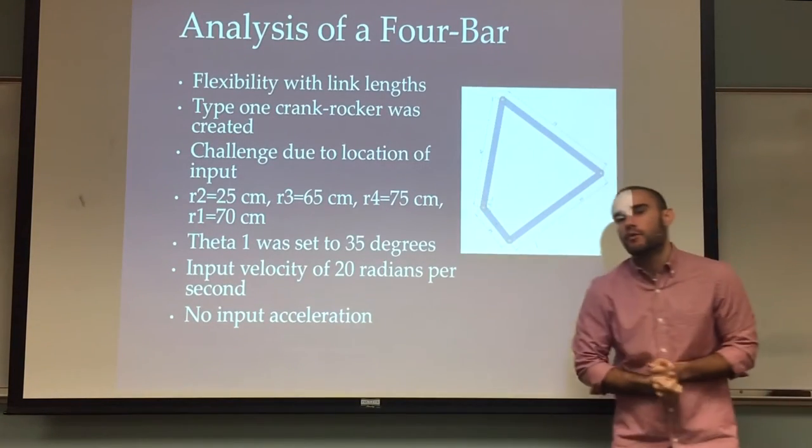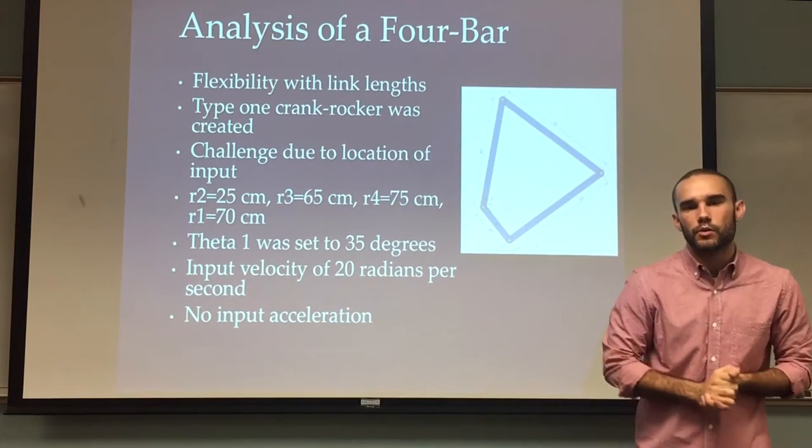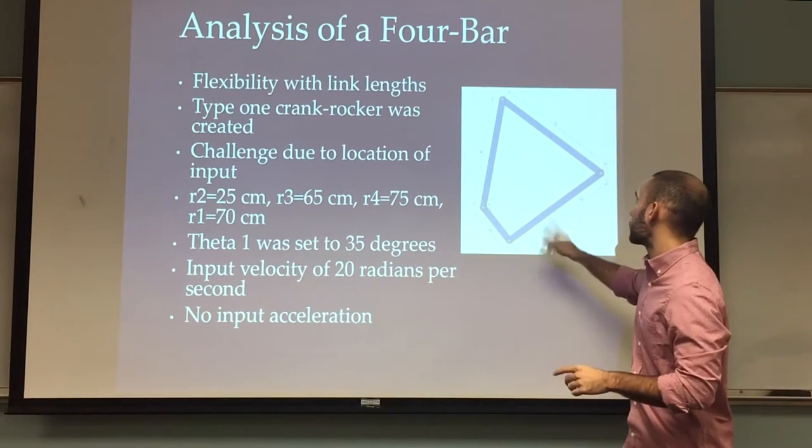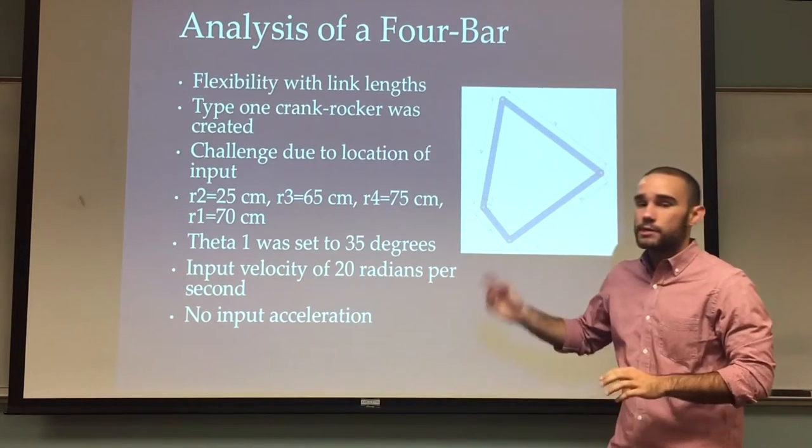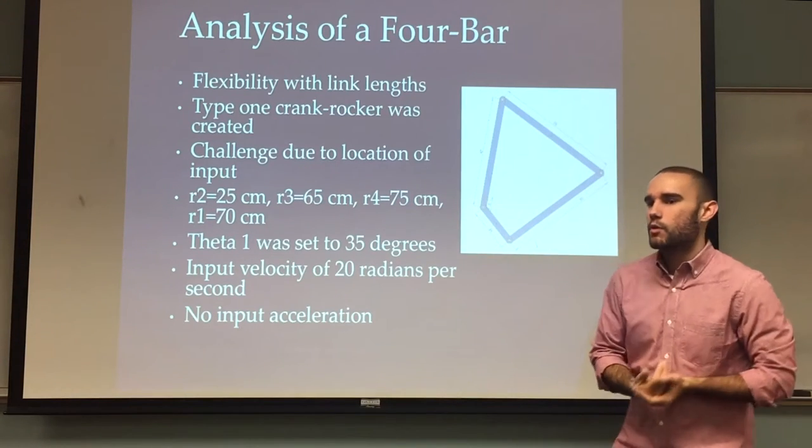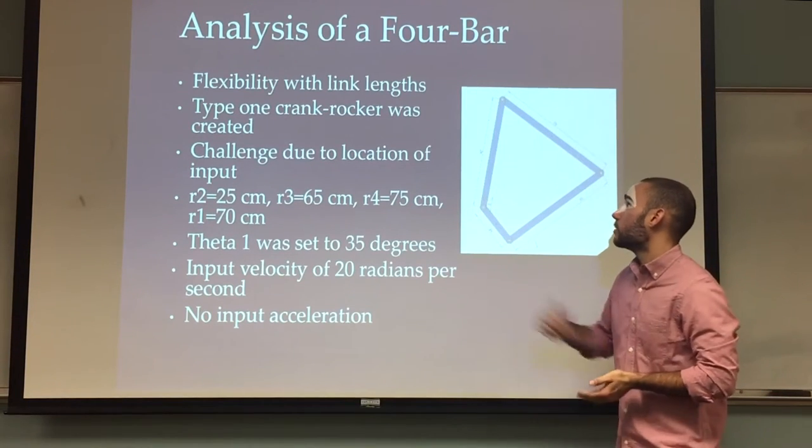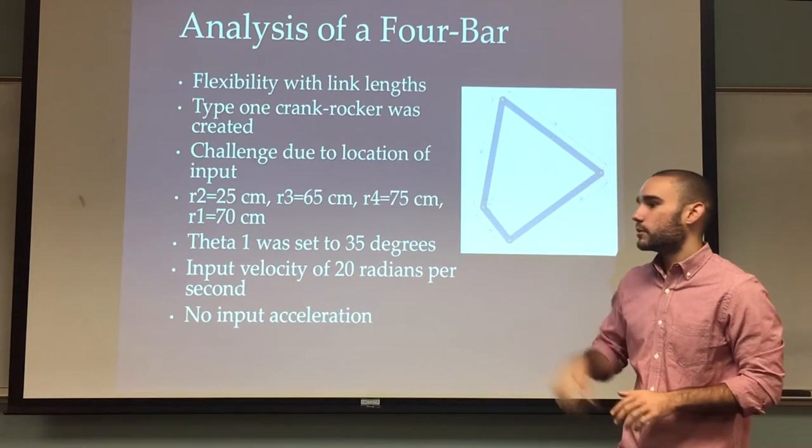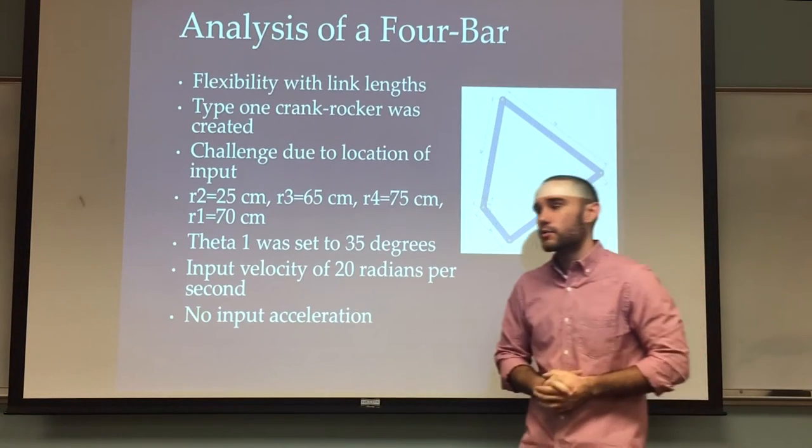Now for the analysis of a four-bar mechanism. Our mechanism left us a little room to play with. We were able to choose the links of R1 and R4, and then our input was at our coupler, theta 3. Our angle for R1 would be 35 degrees, and we had no acceleration at our input but we had an input velocity of 20 radians per second.